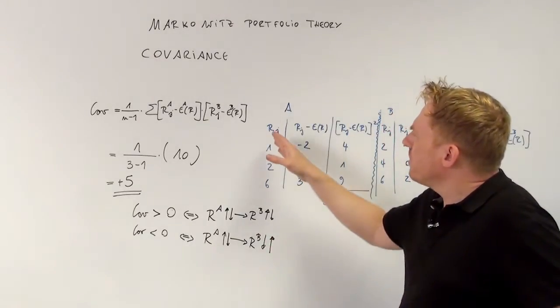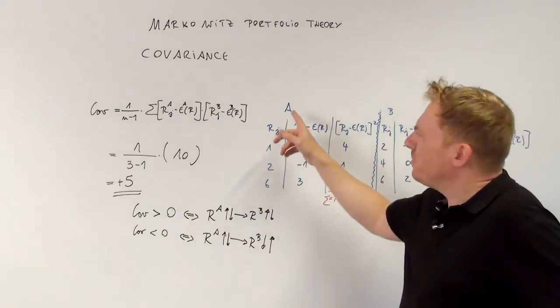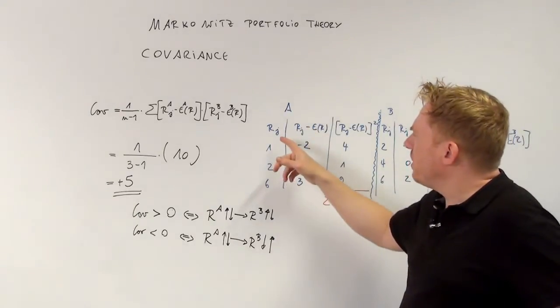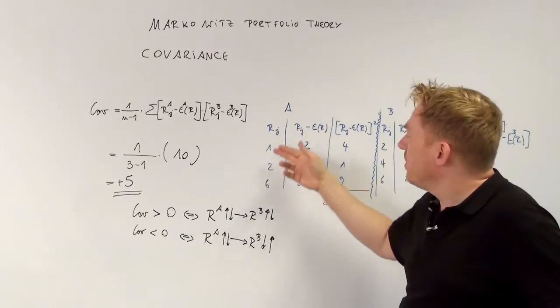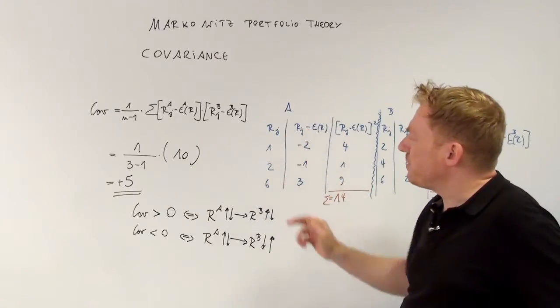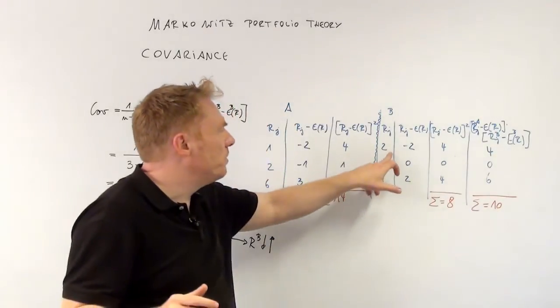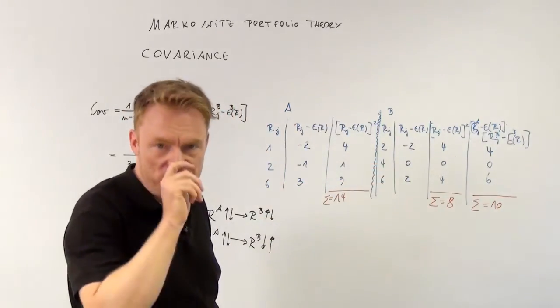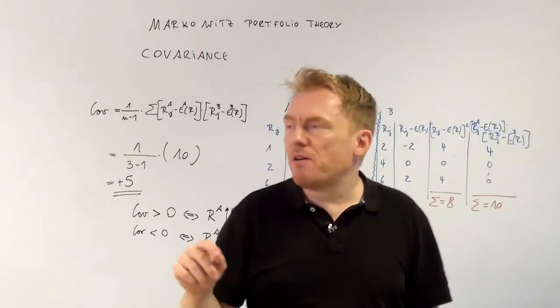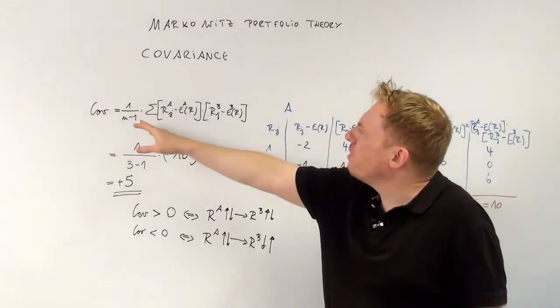Now take a look at this example again. We have two different shares with three different situations for every single share: 1%, 2% or 6% for share A and share B 2 or 4 or 6%. Now the formula for covariance is this.